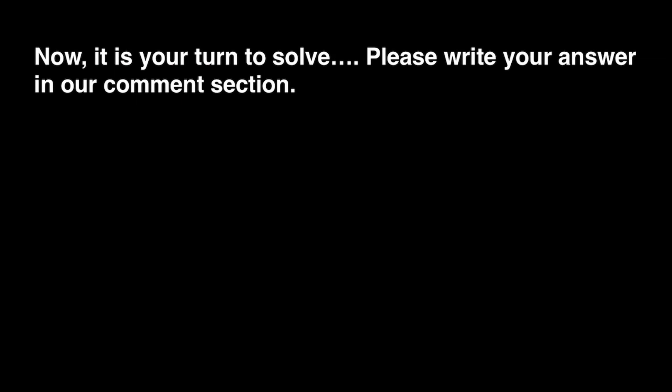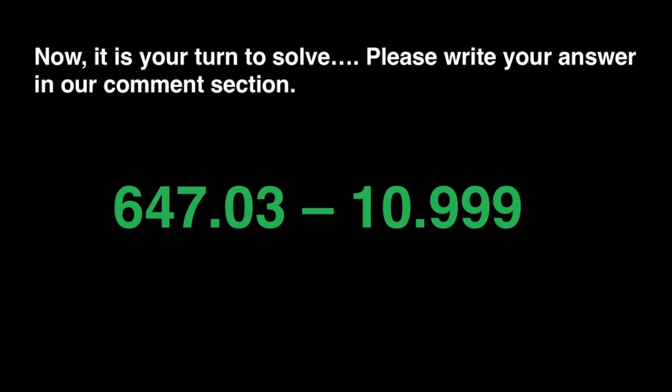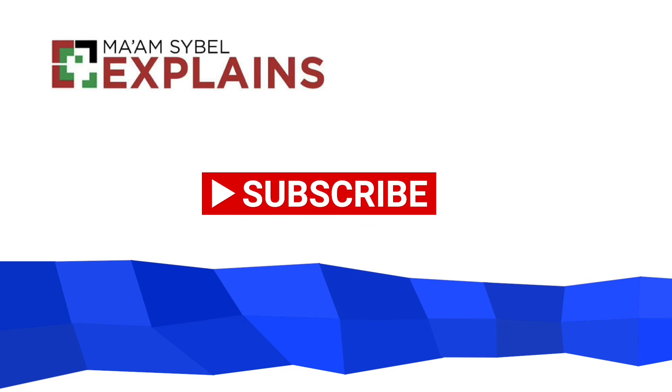Now it is your turn to solve. Please write your answer in our comments section — I will be waiting for your answer. The question is 647 and 3 hundredths subtracted by 10 and 999 thousandths. Thank you. Don't forget to hit the like button if you think this is helpful. Till next time!